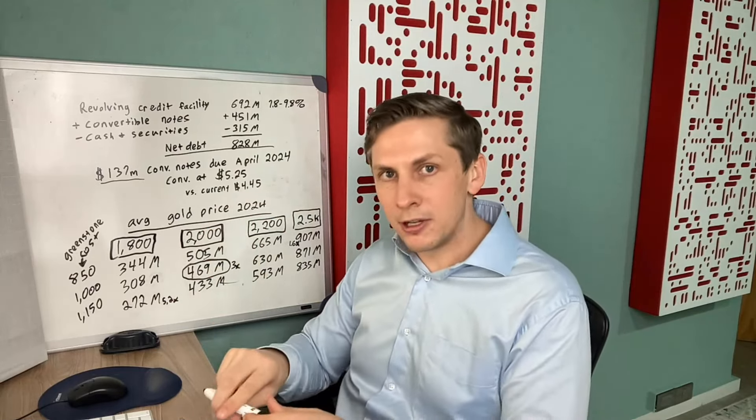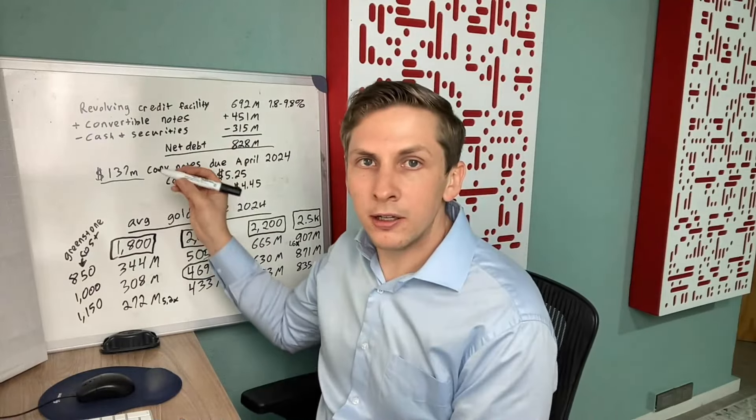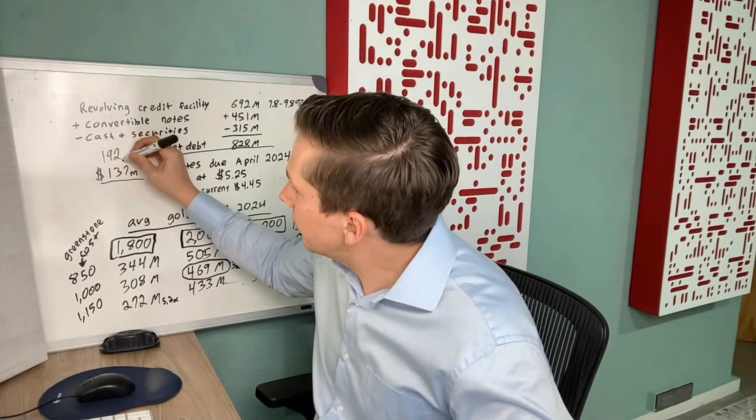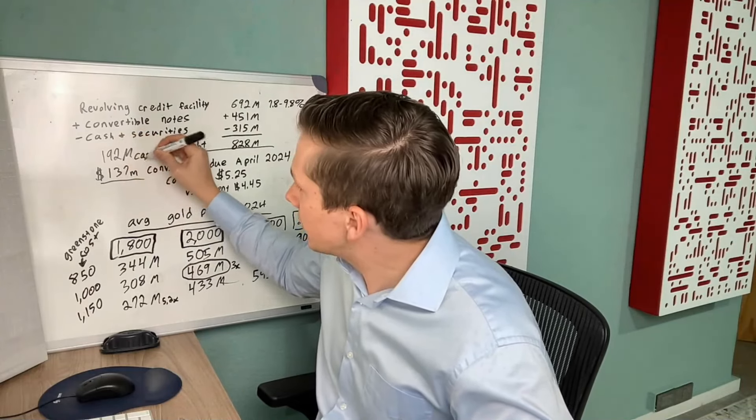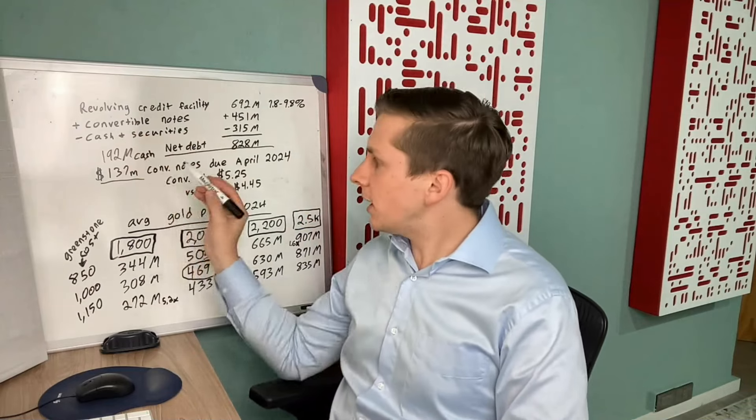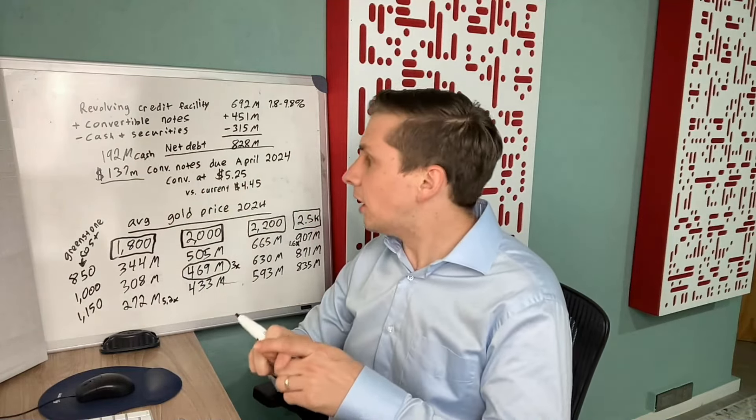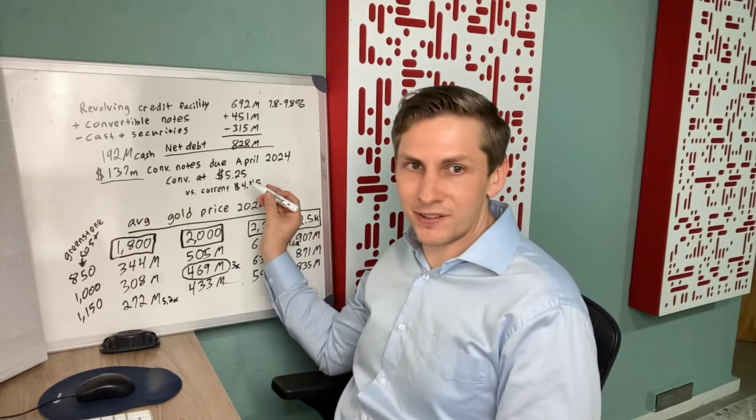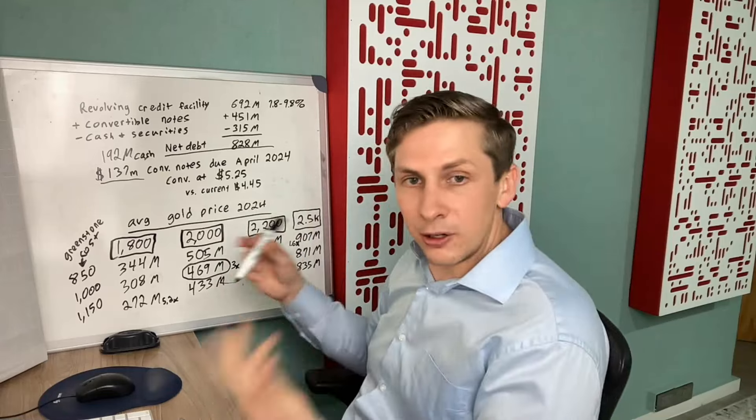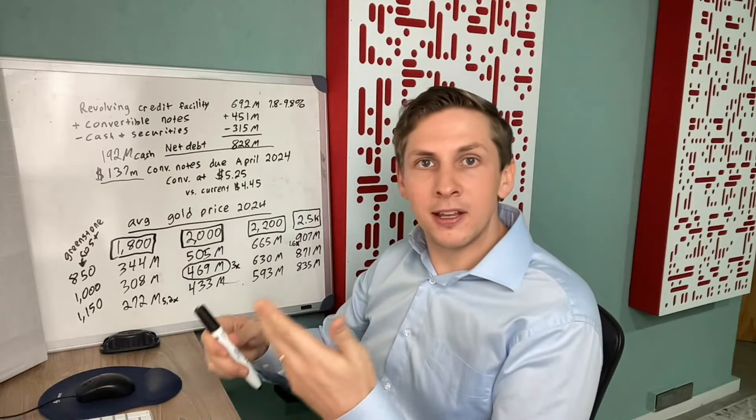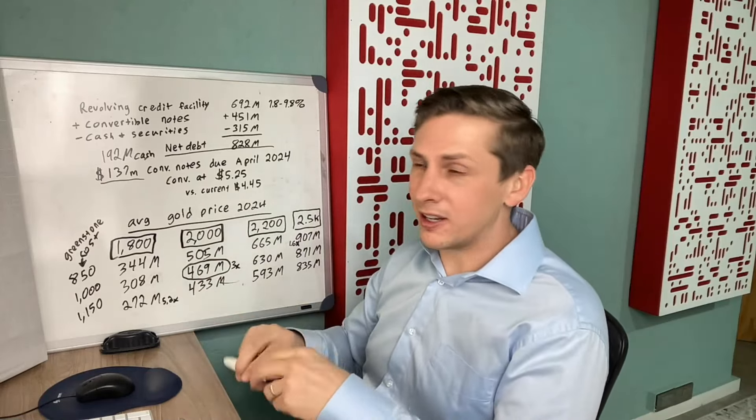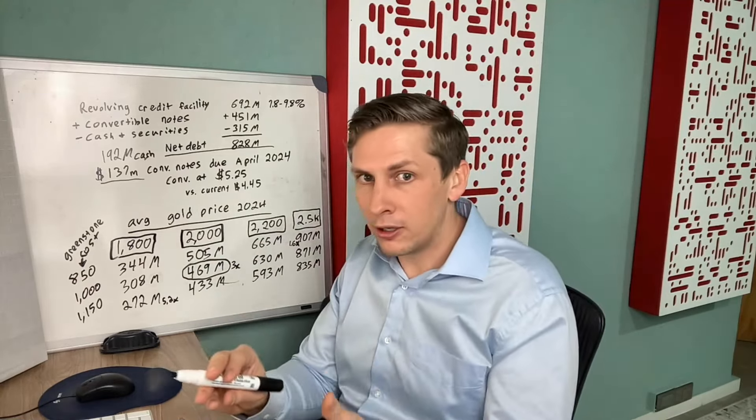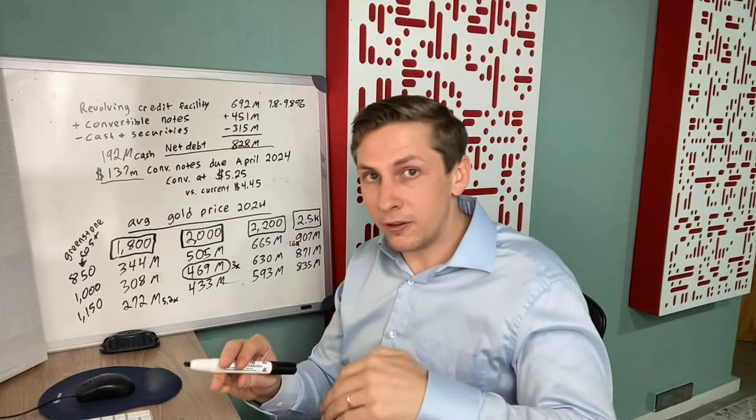Considering as of September 30th they have $192 million in cash, they should easily have enough to pay this upcoming payment of $137 million due in April if the stock price stays below $5.25. Going forward, should the gold price stay somewhere around where it is, and I think $2,000 is kind of looking like the new floor and it's struggling to go under that now.